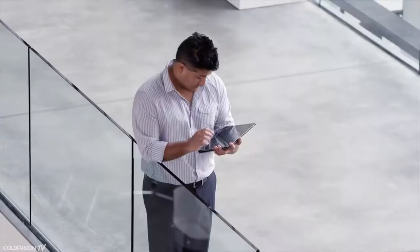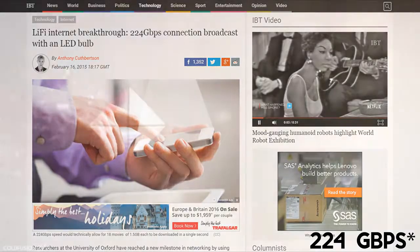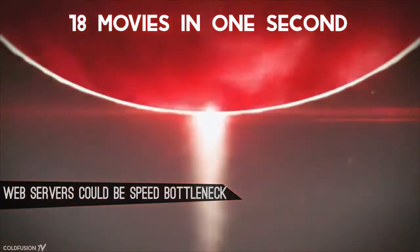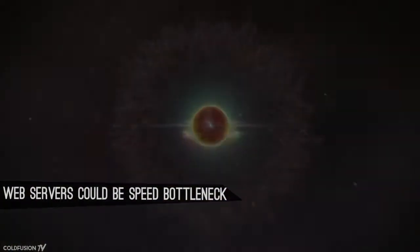But it doesn't stop there. Researchers at Oxford University have published results of visible light internet at 223 gigabits per second. With those speeds, you could download 18 1.5 gigabyte movies in one second. But of course, whether or not the servers will be able to serve those files to you is another story entirely. Still very impressive nonetheless.